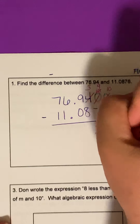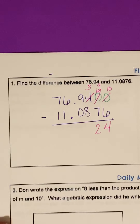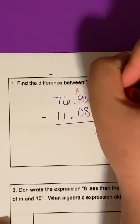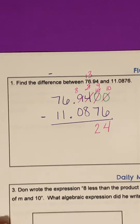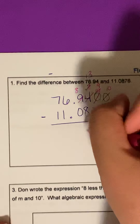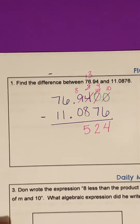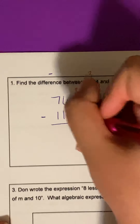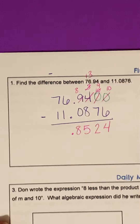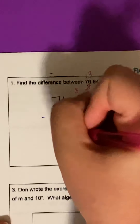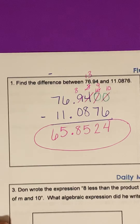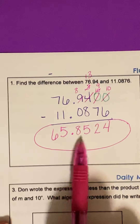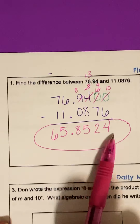10 minus six is four. Nine minus seven is two. Three minus eight — we can't do that, so this nine becomes an eight and the three becomes a 13. 13 minus eight is five. Eight minus zero is eight. Drop your decimal. Six minus one is five. Seven minus one is six. So our answer is 65 and 8,524 ten-thousandths, or 65.8524.